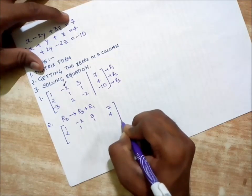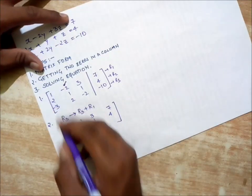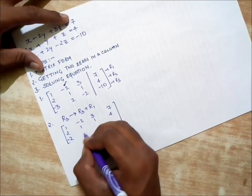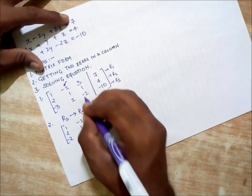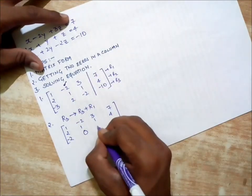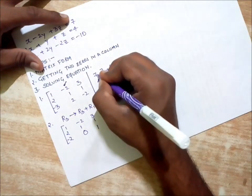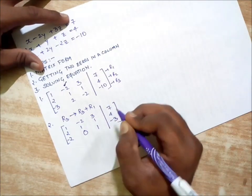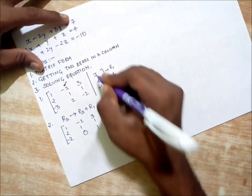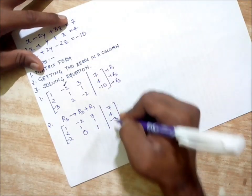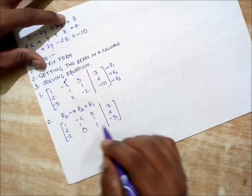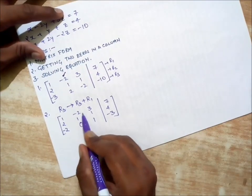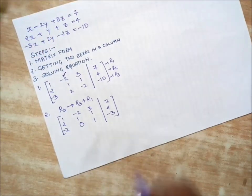Now row three is going to get changed: minus three plus one is minus two, two plus minus two is zero, minus two plus three is one, minus ten plus seven is minus three. Remember guys, we also need to calculate the constants. I have got one zero, I need at least two.